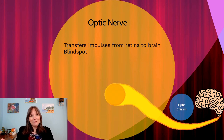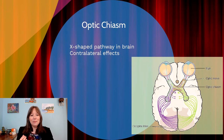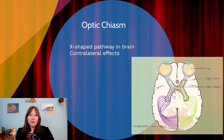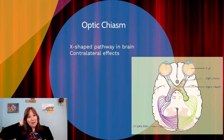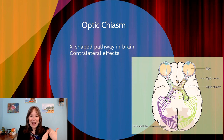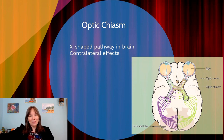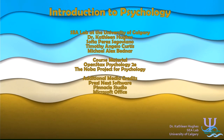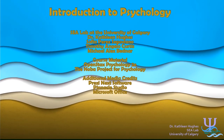The optic nerve travels information to the brain through the optic chiasm — an X-shaped pathway. As discussed with contralateral effects, everything you see in your left visual field — what both your left and right eye see on the left side — travels to the right part of your brain. Everything in your right visual field travels to the left part of the brain. So everything perceived on the left is interpreted by the right occipital lobe, and vice versa, through this X-shaped structure.